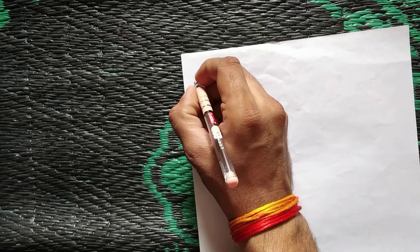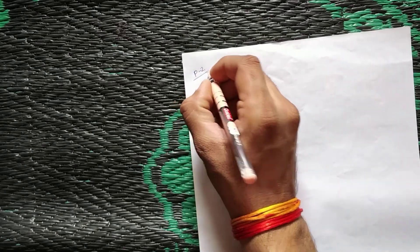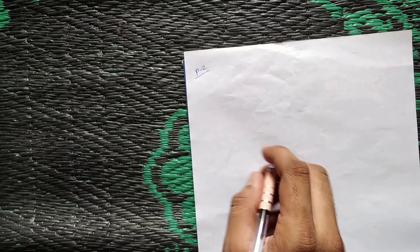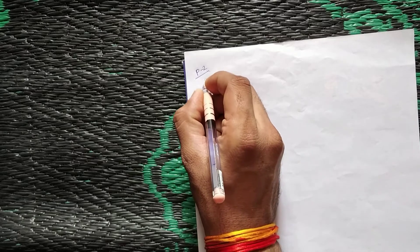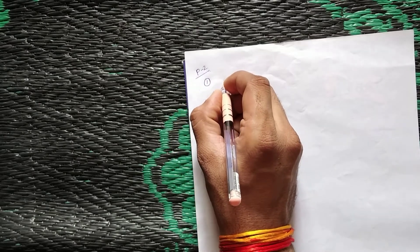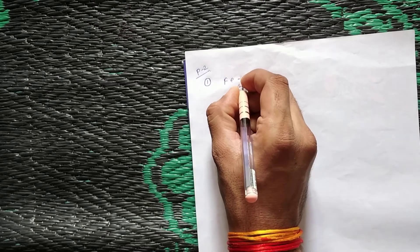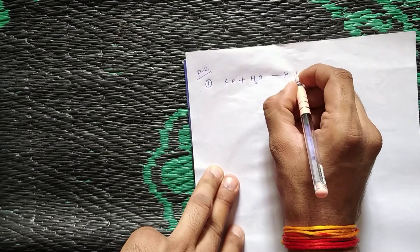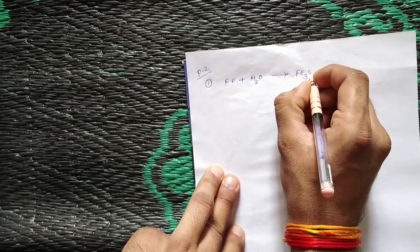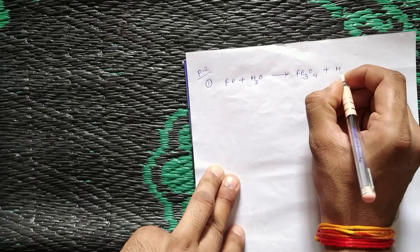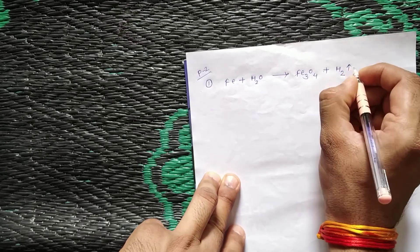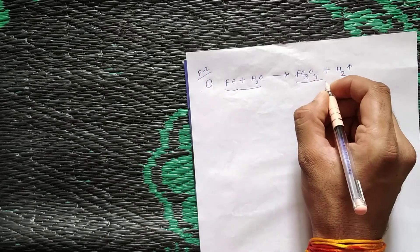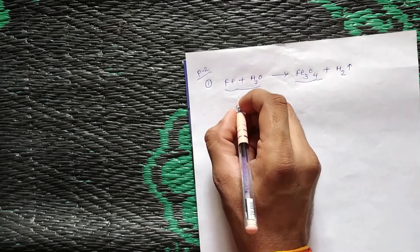In part 2 of chemical reaction and equation, we take another example of chemical reaction: Fe plus H2O forms Fe3O4 and H2 hydrogen gas. When two reactants react to each other and form a product, the left hand side is our reactant and the right hand side is our product.